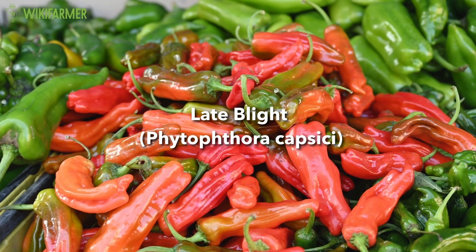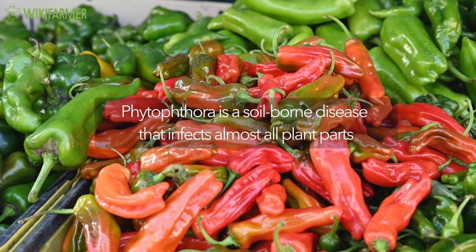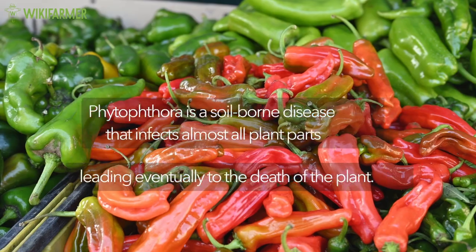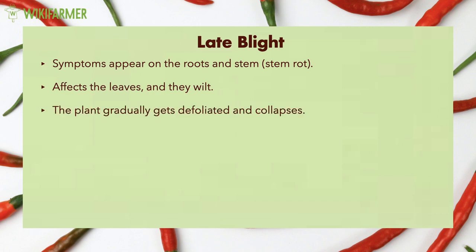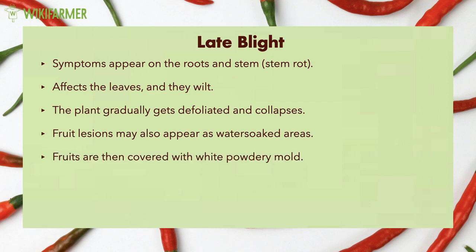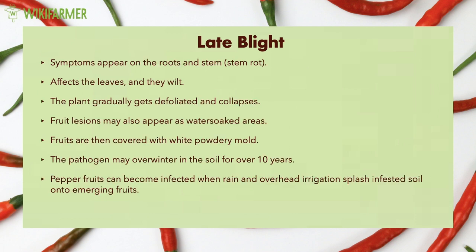Late Blight — Phytophthora. Phytophthora is a soil-borne disease that infects almost all plant parts, leading eventually to the death of the plant. Symptoms most commonly appear on the roots and stem. The disease then affects the leaves as they wilt. The plant gradually gets defoliated and collapses. Fruit lesions may also appear as water-soaked areas, and fruits are then covered with white powdery mold. Unfortunately, the pathogen may overwinter in the soil for over 10 years. Pepper fruits can become infected when rain and overhead irrigation splash infested soil onto emerging fruits.